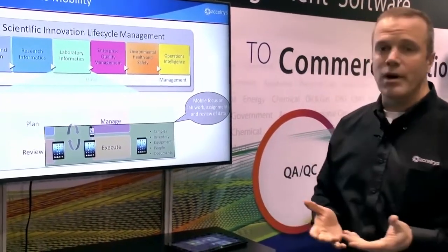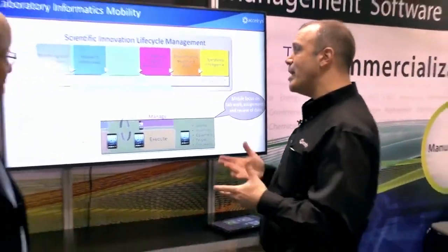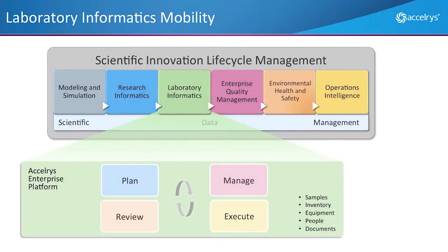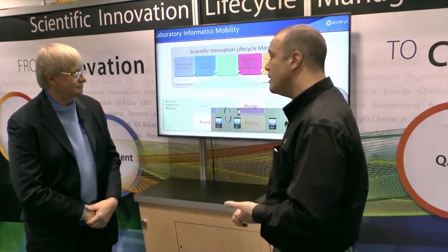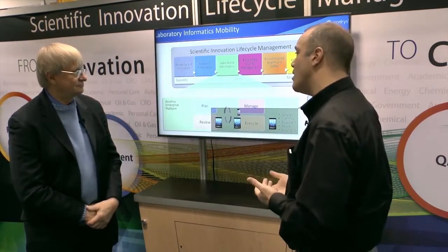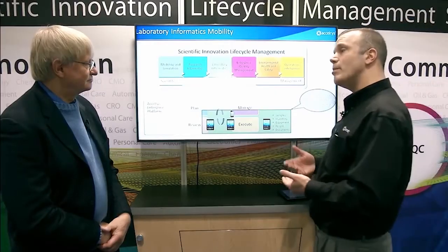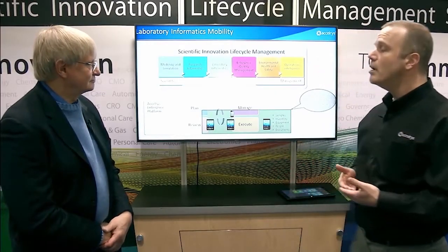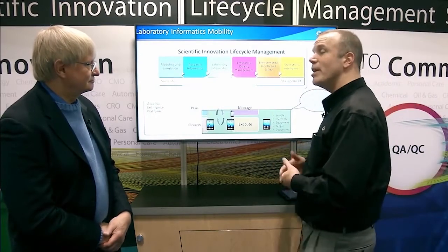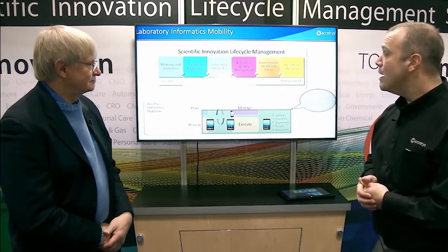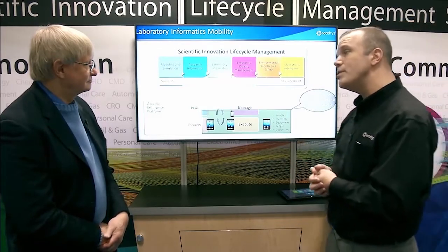If we look at the laboratory informatics area, we can break it down into four main parts: planning, managing, executing, and reviewing. When we think about planning, we're thinking about the work we're going to do in our office — maybe sitting down with our electronic lab notebook, our ELN, setting up an experiment. With this experiment, we might prepare some samples, make something experimentally, or test something. Ultimately, we need to ask the folks in the lab to do that work.